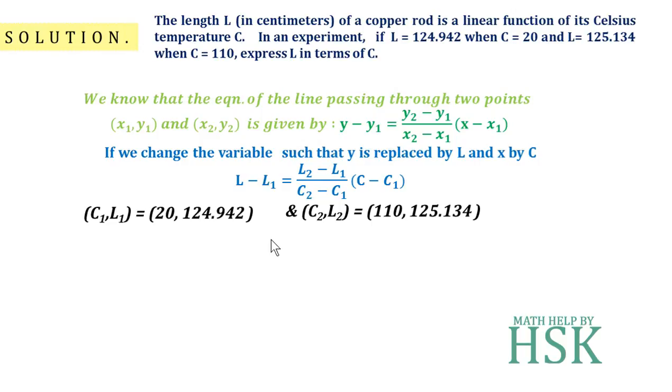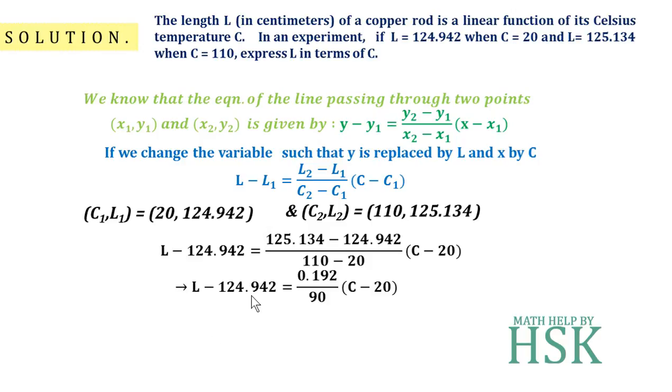So L minus 124.942, placing L₁ as 124.942 and C₁ as 20, and L₂, C₂ as the respective values. For L₂ minus L₁ and C₂ minus C₁, we get this. On solving further, I am going to get L minus 124.942 equals 0.192 over 90 times (C minus 20).